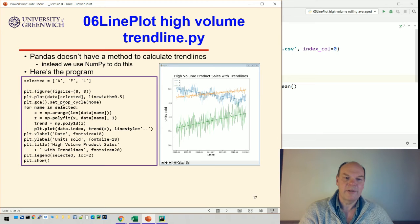And then we reset prop cycle. That's just so that the next set of lines we draw are going to be the same colors as the originals. And then we use NumPy to get a range of values in the x variable, and we do a fitting.